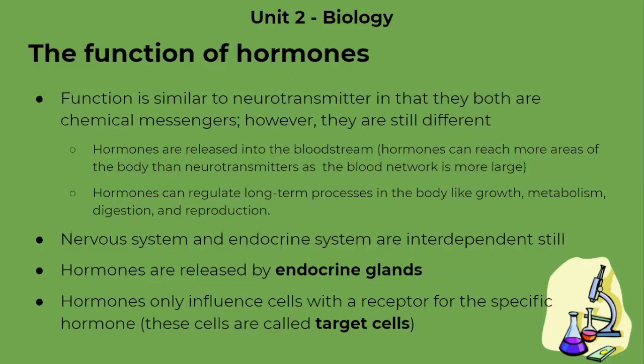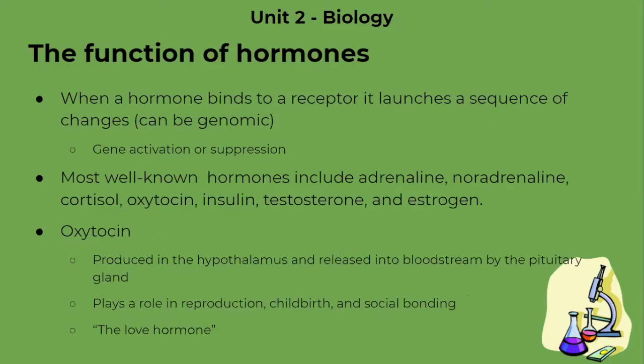The hormone, when released into the bloodstream, will go out and will be taken in only by the target cells, which will have a receptor that allows the hormone to bind and cause a series of changes. Once the hormone binds to the receptor on a target cell, it will launch a sequence of changes which can be genomic — relating to genes — involved in gene activation and suppression. This will cause an amplification of different reactions in the cell.